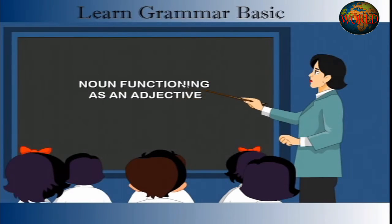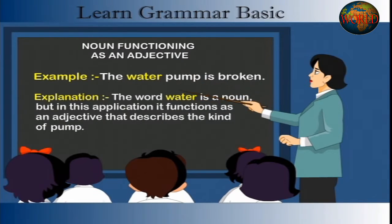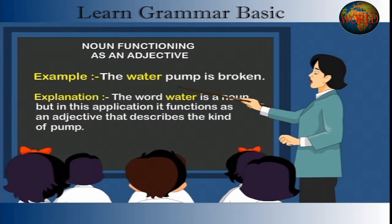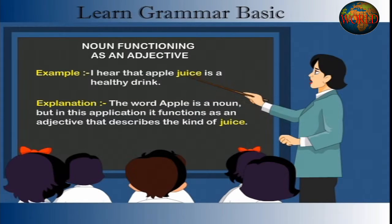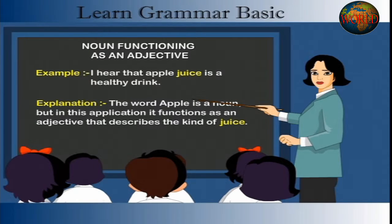Noun Functioning as an Adjective. Example: The water pump is broken. Explanation: The word 'water' is a noun, but in this application it functions as an adjective that describes the kind of pump. Example: I hear that apple juice is a healthy drink. Explanation: The word 'apple' is a noun, but in this application it functions as an adjective that describes the kind of juice.